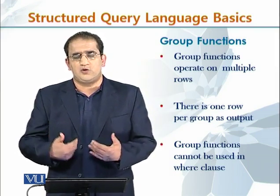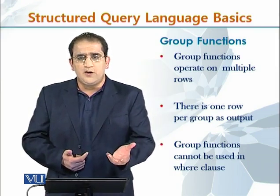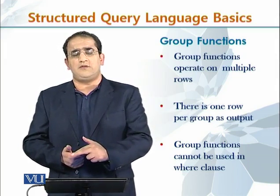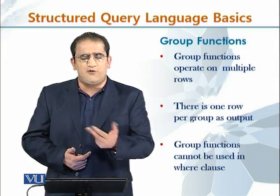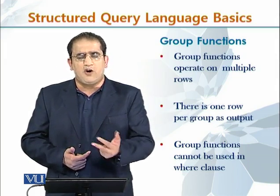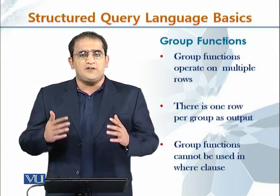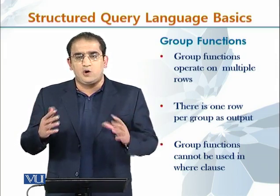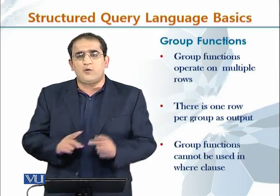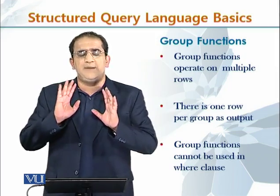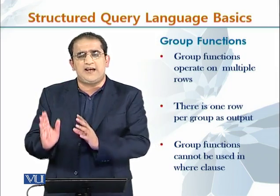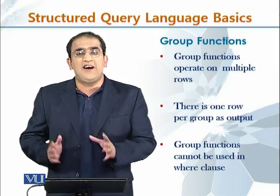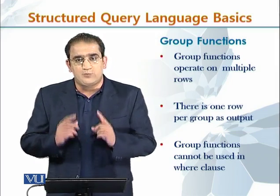So, if you are having five groups, you will get five values — five rows, five columns. For example, if you have 100 rows but you have 5 groups, then your output will be 5. The output will not be 100. That is point number one.